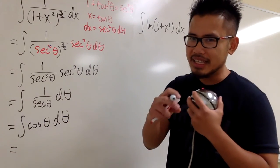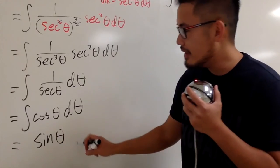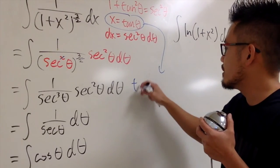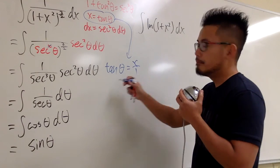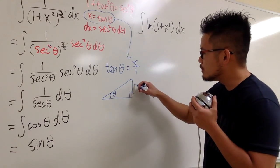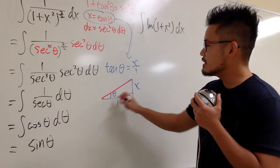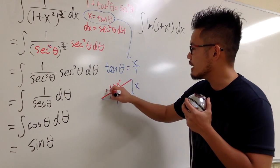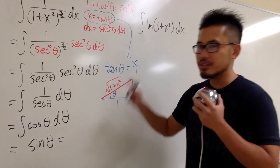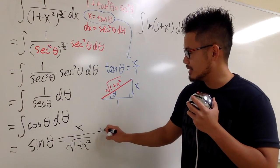The integral of cosine theta d theta is positive sine theta. Now we take this back to the x world using the substitution equation. Tangent theta equals x over 1, so we draw a right triangle with angle theta, opposite side x, and adjacent side 1. The hypotenuse is square root of 1 plus x squared. Sine is opposite over hypotenuse, so sine theta equals x over square root of 1 plus x squared. That's the answer, plus C.